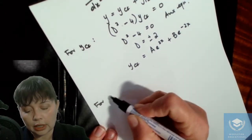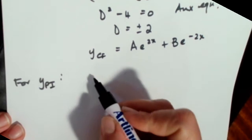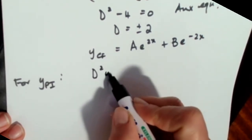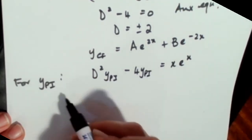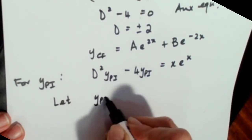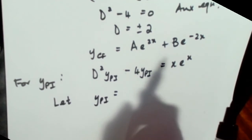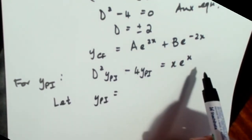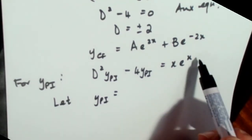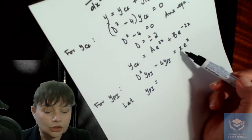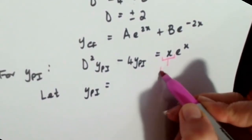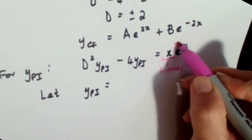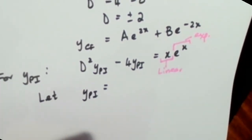Now for our particular integral, we can write our differential equation as y'' minus 4y_pi, and that has to equal xe to the x. We have to choose our trial function so that if you find the first derivative and the second derivative and substitute into your differential equation, the equation balances. We're working with a product here, so you have to break your product up. This part is linear, and that part is exponential.